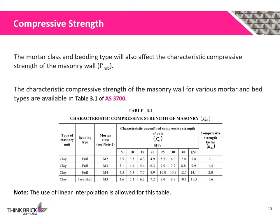The characteristic compressive strength of the masonry wall is also affected by the mortar class and the bedding type. The characteristic compressive strength for various mortar and bedding types can be found in Table 3.1 of AS3700.